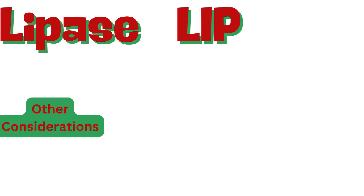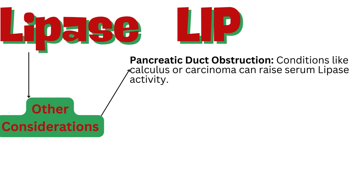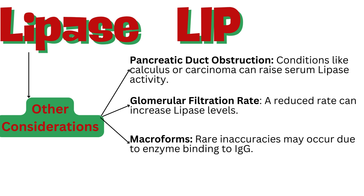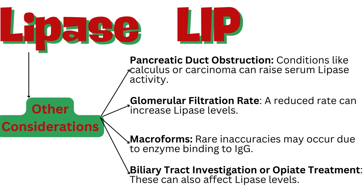Various conditions and factors can affect lipase levels. Pancreatic duct obstruction — conditions like calculus or carcinoma — can raise serum lipase activity. A reduced glomerular filtration rate can increase lipase levels. Rare inaccuracies may occur due to enzyme binding to IgG (macroforms). Biliary tract investigation or opiate treatment can also affect lipase levels.